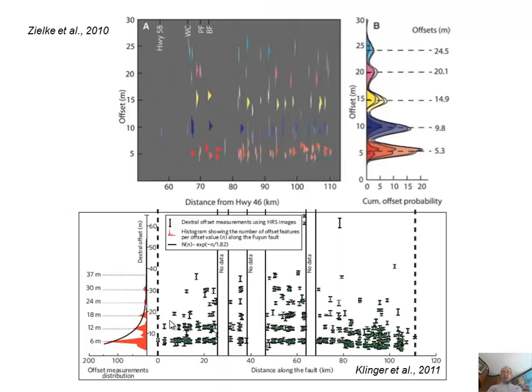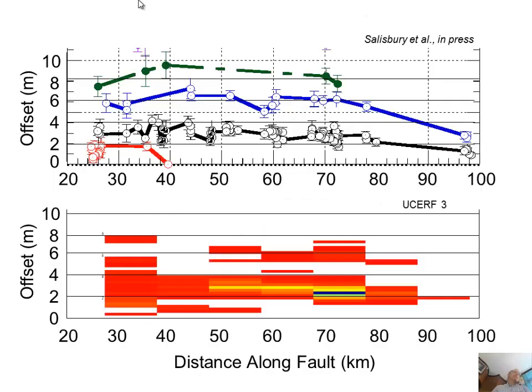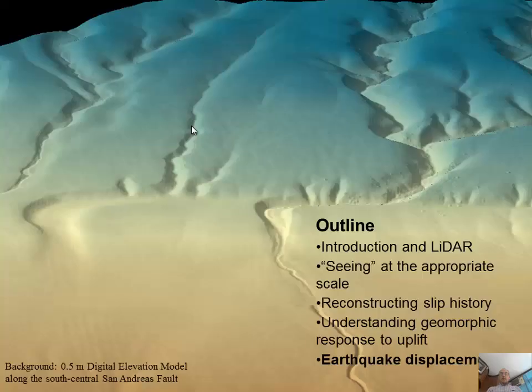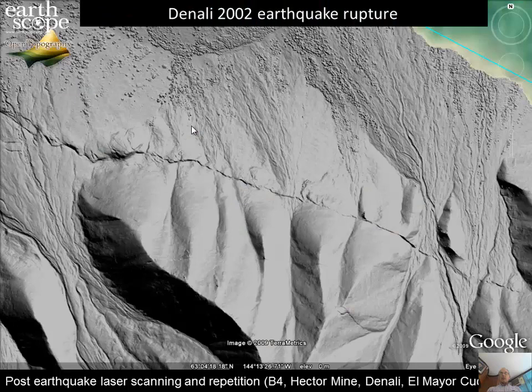Any questions on the offset story? This one — the computer is just averaging whatever's there. Whereas this is the smart geologist saying, 'I know this is probably the last earthquake, and I had some other information that says there was no cracking associated with that earthquake at that time.' Good question — very observant. So, let's go to earthquake displacement: studying a single earthquake with the LiDAR.